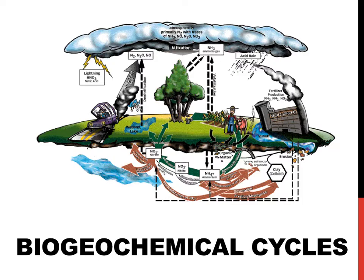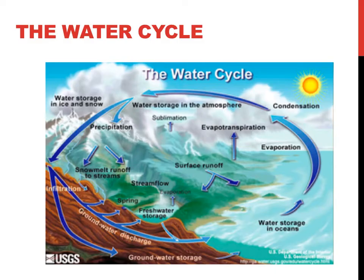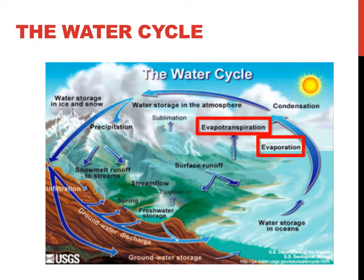The nitrogen cycle, one of the three cycles that will be described in this video, is illustrated on this slide. The water cycle is the process by which water moves to and from the sea, air, and land. Water moves from bodies of water to the air in a process called evaporation.